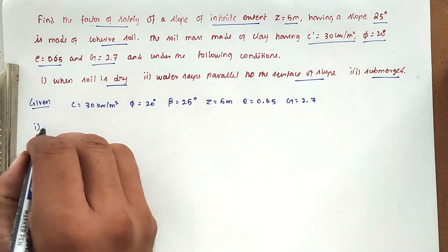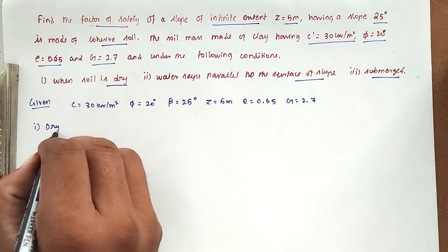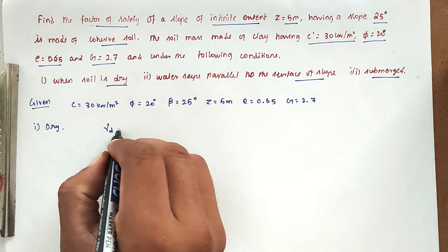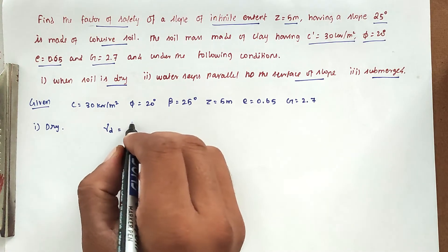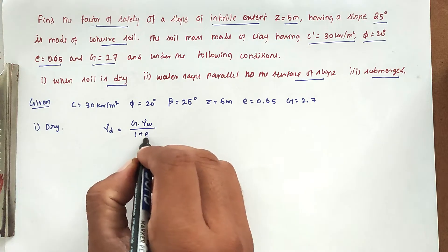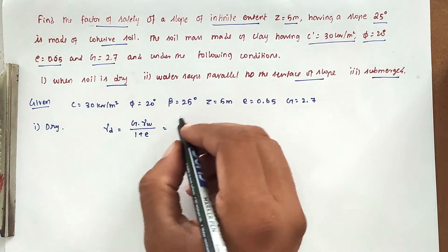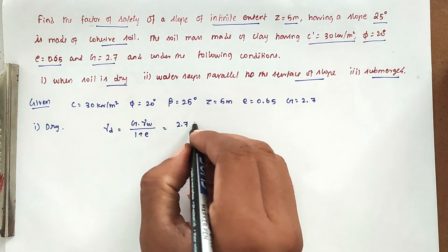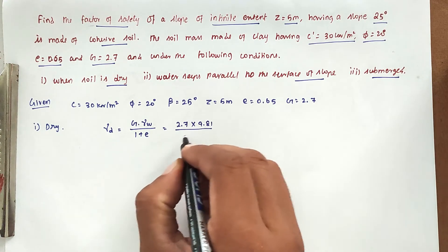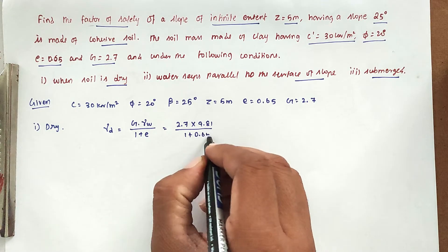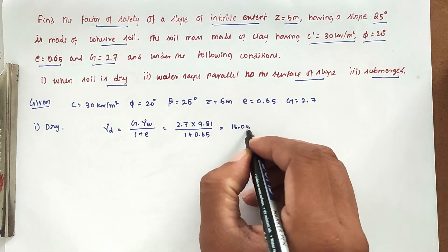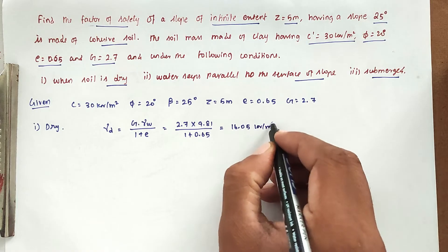First condition: soil is dry. The unit weight will be gamma_D, the dry unit weight. The formula is: gamma_D equals G times gamma_W divided by (1 plus E). Substituting values: 2.7 times 9.81 divided by (1 plus 0.65). Solving this, we get gamma_D equal to 16.05 kilo Newton per meter cube.